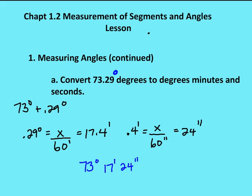I still have a decimal, 17.4 minutes, so I need to convert the 0.4 minutes into seconds. Since every minute has 60 seconds, I set up my ratio: 0.4 equals x over 60 seconds, and x equals 24 seconds. So my result is that 73.29 degrees is equivalent to 73 degrees, 17 minutes, 24 seconds.